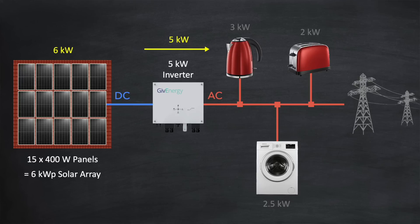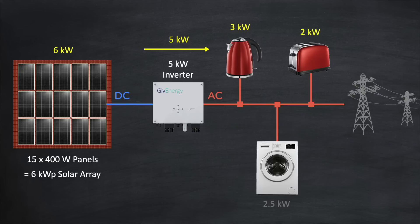In our example we'll have three appliances connected to the main circuit: a kettle, a toaster and a washing machine. On a bright sunny day the array might generate 6 kilowatts, but the inverter is rated for a maximum of 5 kilowatts, so the other kilowatt of power is simply lost. We can switch the kettle on — which requires 3 kilowatts — and the remaining 2 kilowatts is exported to the grid. Adding the toaster, which requires 2 kilowatts, brings total consumption to 5 kilowatts, matching the inverter output with no export. Switching on the washing machine as well requires an extra 2.5 kilowatts from the grid.